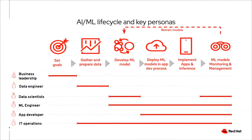At the bottom of the slide, we have the data engineer, the data scientist, the app developer, and a new persona we're starting to see in many organizations: the machine learning engineer. Think of a machine learning engineer as a software developer who also has some of the skill sets of a data scientist, so they can work with both data scientists and application developers to help get models rolled out into production. And then there's IT operations, whose job is to provide the supporting infrastructure and application services that all these different personas need to get their job done quickly.